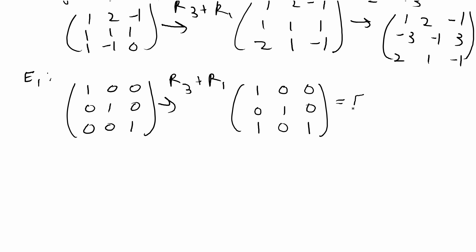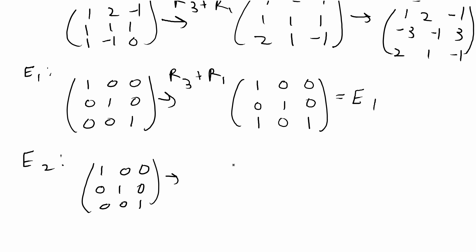For E2, we're going to do the same thing, but for the second elementary row operation, which was R2 minus 2R3. That gives 1, 0, 0, 0, 1, negative 2, 0, 0, 1, and that's equal to the second elementary matrix.